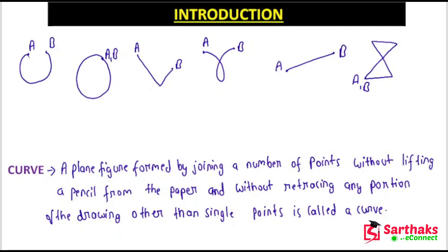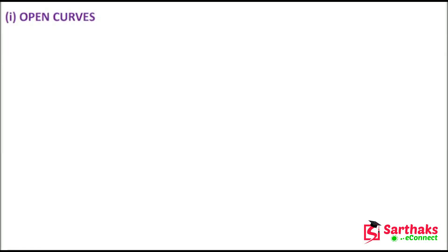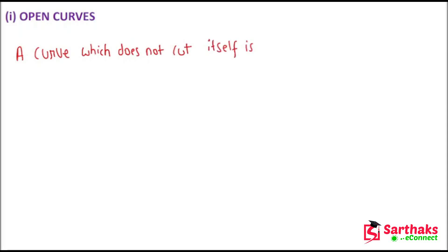All of these figures drawn here are called curves. Now there must be some classification of curves — these curves are not all similar; they have different properties. The first type is open curves. A curve which does not cut itself is called an open curve. Let me draw some examples.